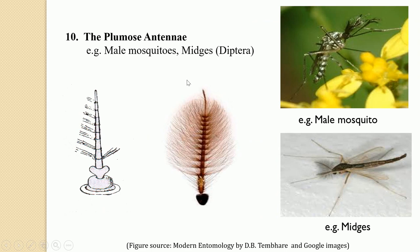The next type is plumose antennae. In plumose antennae, the flagellum is composed of a large number of cylindrical segments, and these segments are provided with long hairs on either side. The basal segment is the scape, then the pedicel, and the cylindrical flagellar segments carry long hairs on both sides. The plumose antennae is characteristic of male mosquitoes and midges belonging to order Diptera, and it has sexual dimorphic significance as it is only found in male mosquitoes.